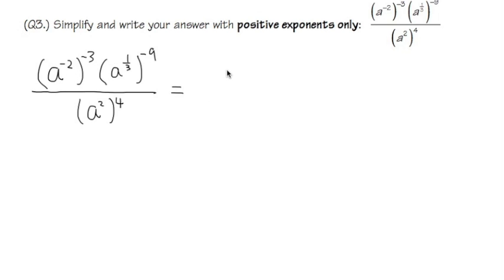So for the first part, we are going to get a, the base stays the same, and we have negative 2 times negative 3. That will be positive 6.